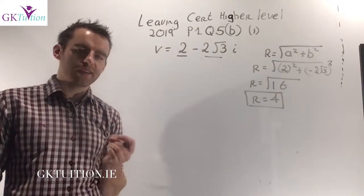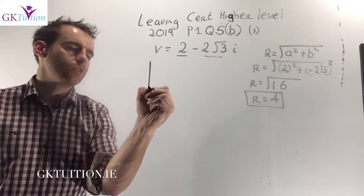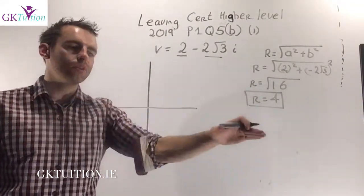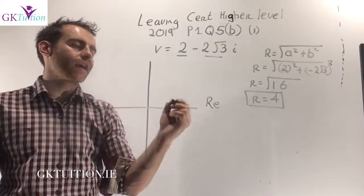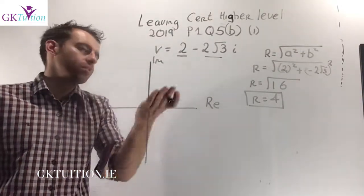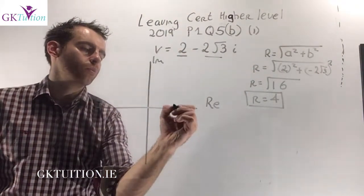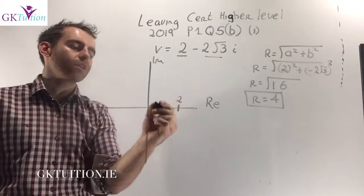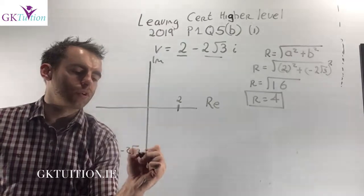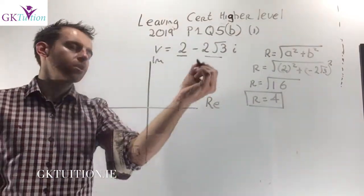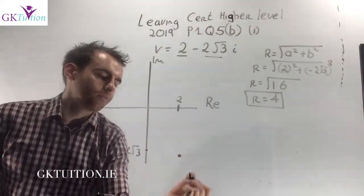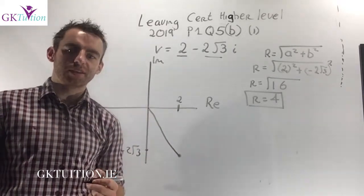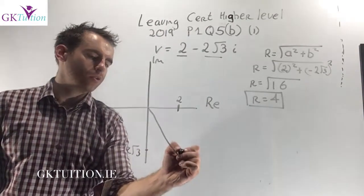Finding θ, the argument, is more complicated. Draw an Argand diagram where the horizontal axis is real and the vertical axis is imaginary. The real part is 2 and the imaginary part is −2√3, so v sits in the fourth quadrant. Join v to the origin, then drop a perpendicular to the real axis to form a right-angle triangle. The angle we want, θ, is measured from the positive real axis.